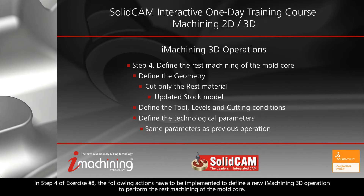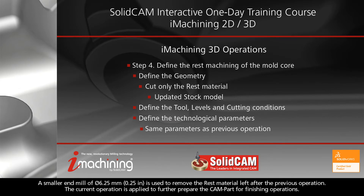In Step 4 of Exercise No. 8, the following actions have to be implemented to define a new iMachining 3D operation to perform the rest machining of the mold core. A smaller end mill of 6.25 mm is used to remove the rest material left after the previous operation. The current operation is applied to further prepare the cam part for finishing operations.